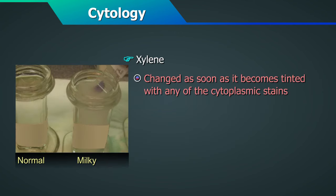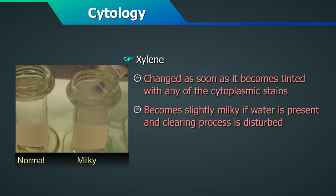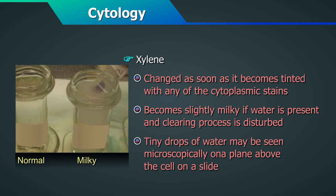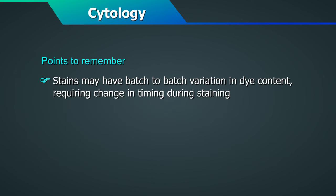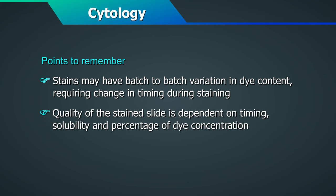Xylene should be changed as soon as it becomes tinted with any of the cytoplasmic stains. Xylene becomes slightly milky if water is present, and if so, the clearing process may be disturbed — tiny drops of water may be seen microscopically on a plane above the cell on a slide. Stains may have batch-to-batch variation in dye content, requiring changes in timing during staining. The quality of the stained slide is dependent on timing, solubility and percentage of the dye concentration.